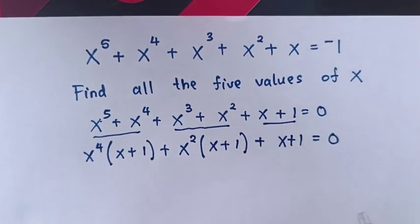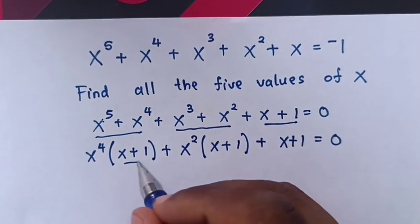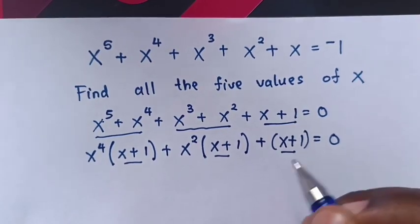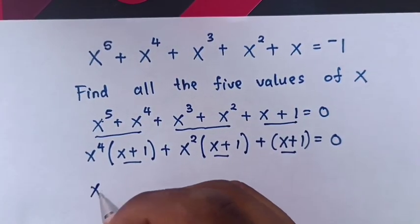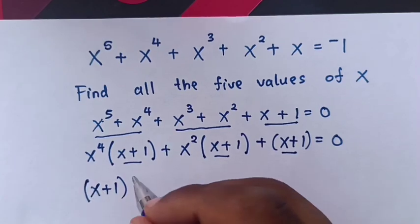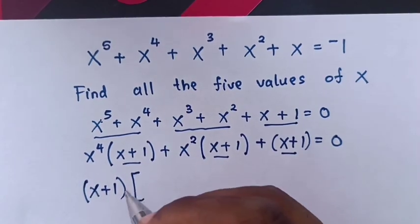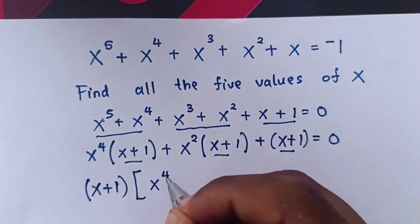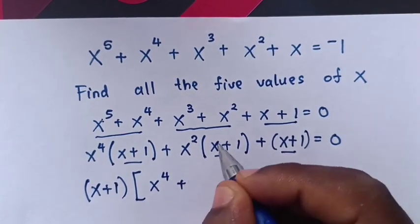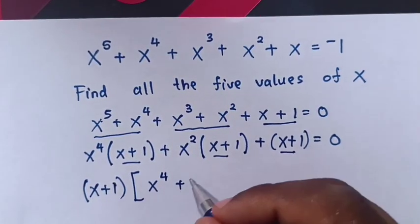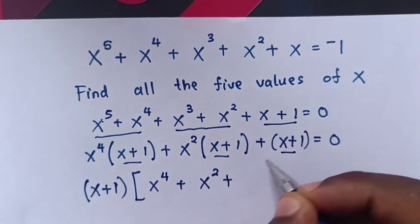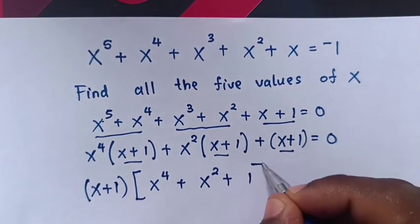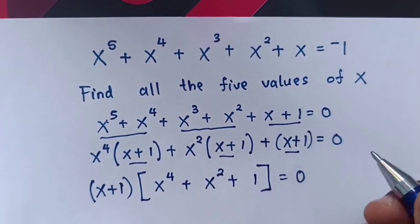Now, we can see x + 1, x + 1, x + 1 is common. So x + 1, out of bracket — this part divided by x + 1 is x⁴, plus this part divided by this is x², plus here divided by this is 1 — bracket equals 0.